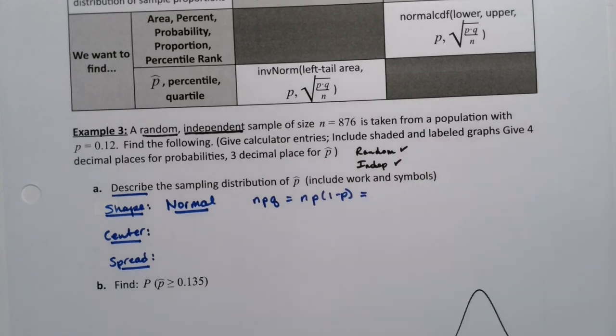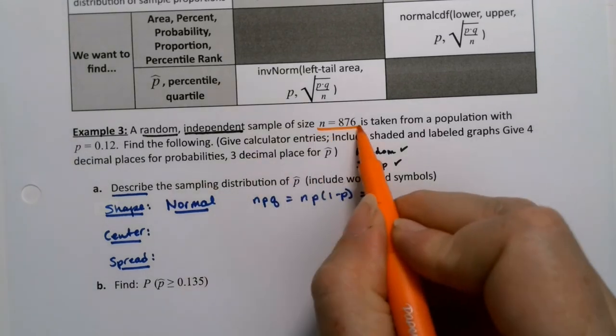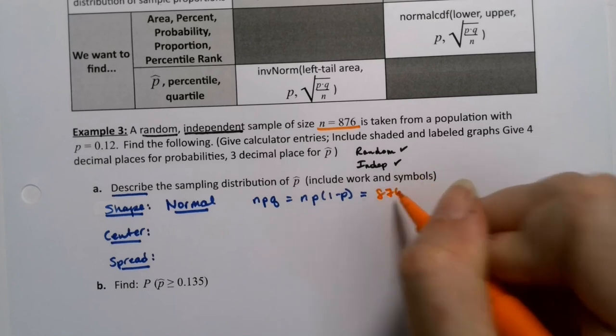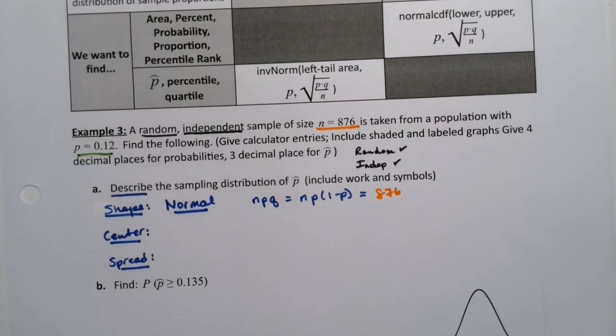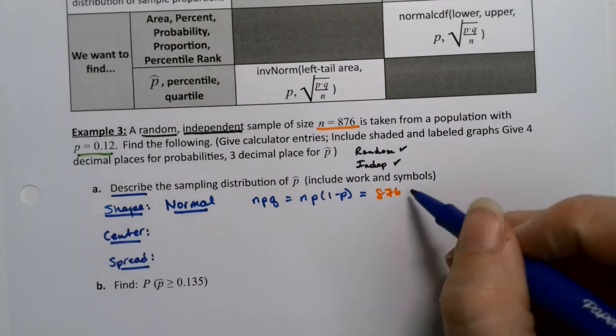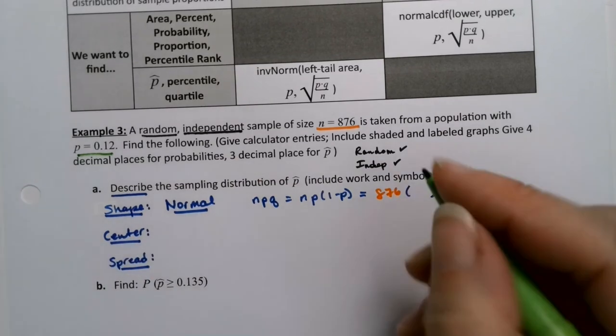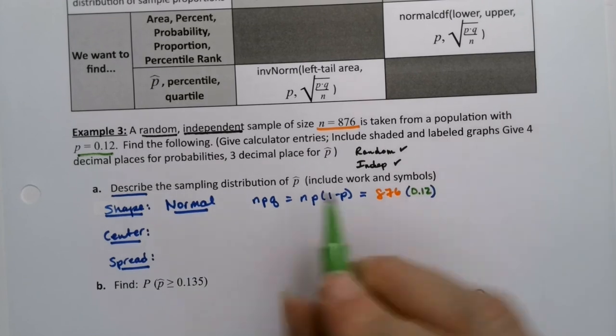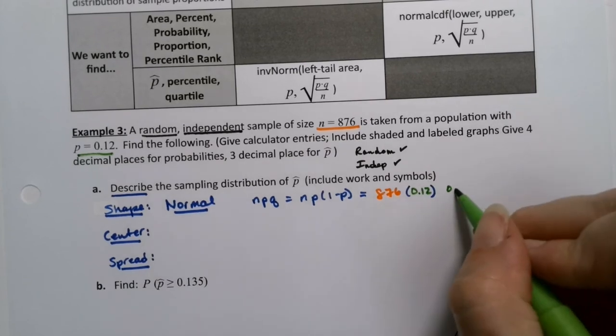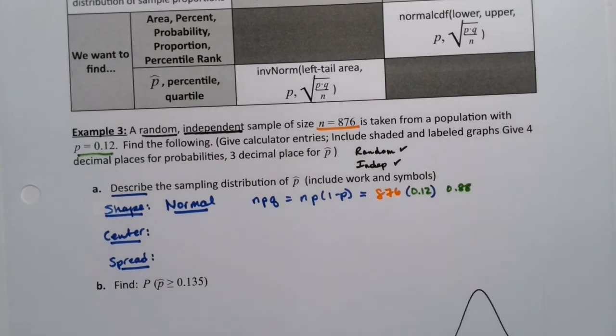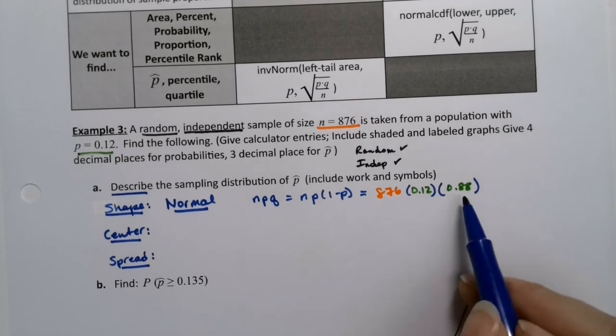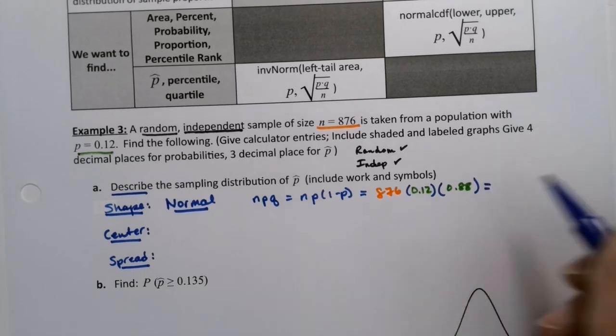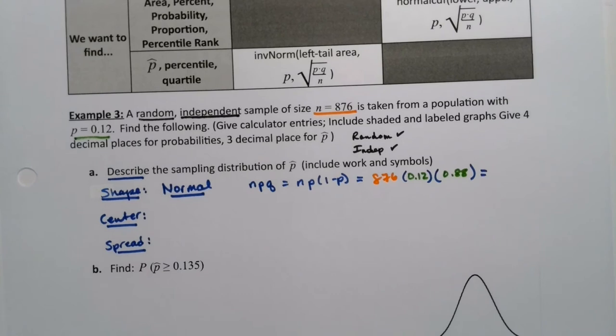To make it normal, we need npq, which is of course n times p times 1 minus p, to be greater than 10. Now n was given to us—that's right here—is 876, and p was given to us as 0.12. So we have n, 876 times 0.12 times its complement, which would be 0.88. 1 minus 0.12 is 0.88, or in other words, 12 and 88 make 100. I need that number to turn out bigger than 10.